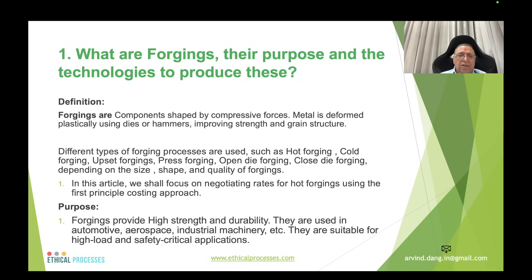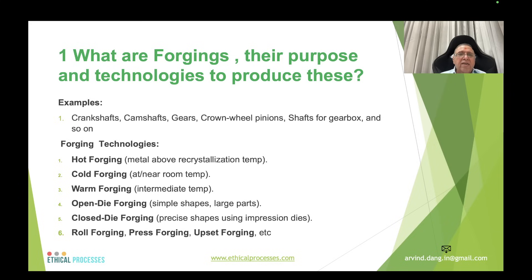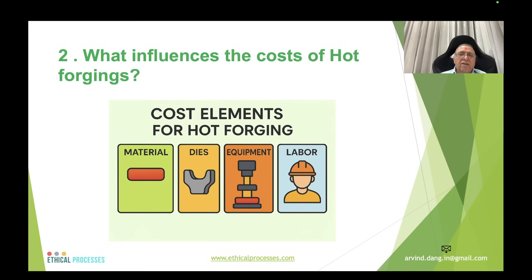The purpose of forging is to provide high strength and durability, used in automotive, aerospace, and heavy machinery. Suitable for high-load and safety-critical applications — examples include crankshafts, camshafts, gears, crown wheel pinions, and shafts for gearboxes. These forgings are produced by taking metal above different temperatures: hot forging above recrystallization temperature, cold forging near room temperature, and warm forging at intermediate temperatures.